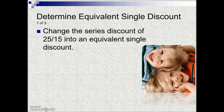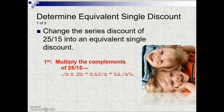Let's take a look. In this first example, we're asked to change the series discount of 25% and 15% into an equivalent single discount. The first step is to multiply the complements. Recall that the complement is 100% minus the discount — this gives us what they're actually paying. The complement of 25% is 75%, and the complement of 15% is 85%. The product of the complements is 63.75%, which is what they're actually paying of the list price.